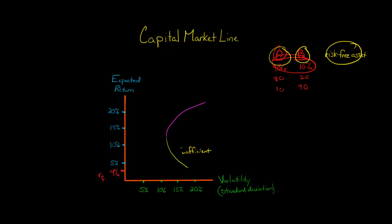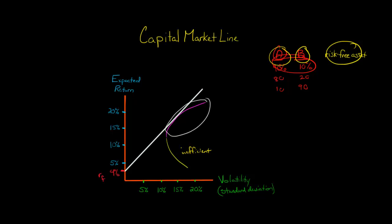Let's say the risk-free rate of return is 4% hypothetically. From that risk-free rate of return, we could draw a line — just such that it's tangent, so that it barely touches the efficient frontier curve.